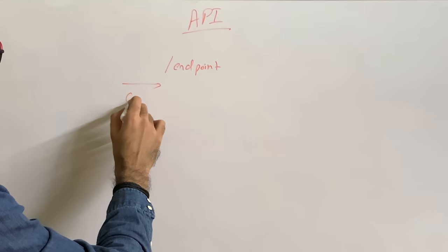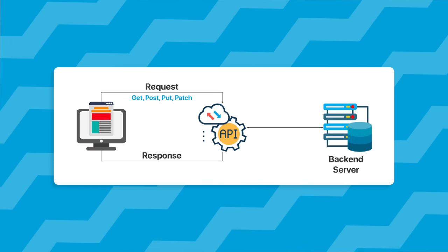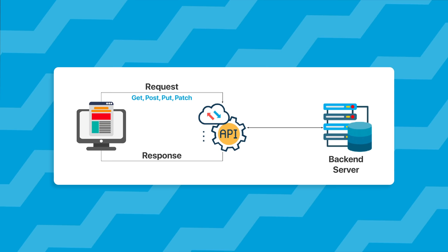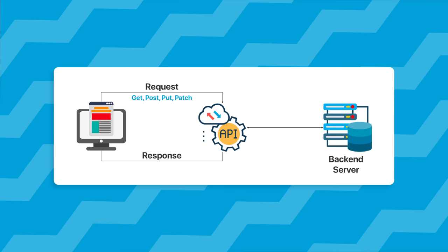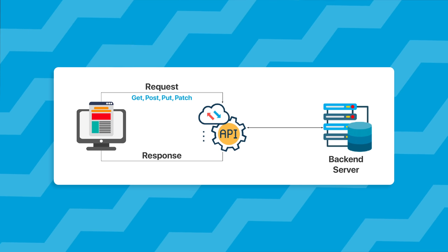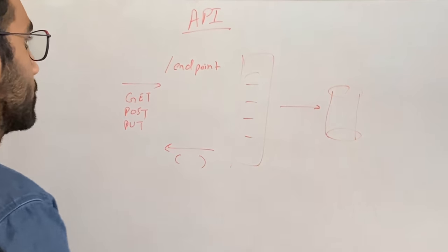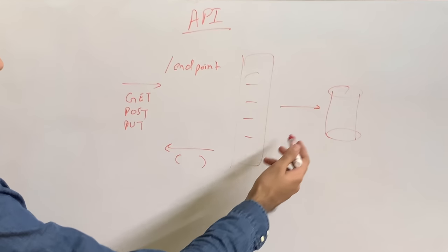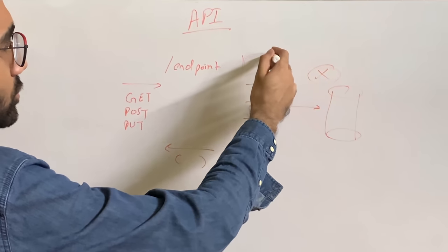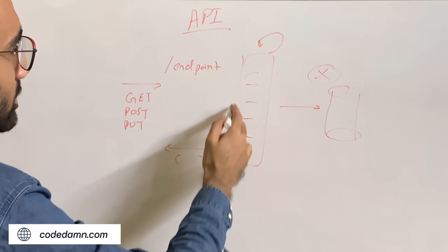You send a request using certain methods: get, post, put, patch, whatever it is, and then you get a response back. Maybe that backend server where your API is running also does some side effect on a database. That's mostly what most of the APIs do. This could not just involve database as well. This could be just computing something on the server and returning.